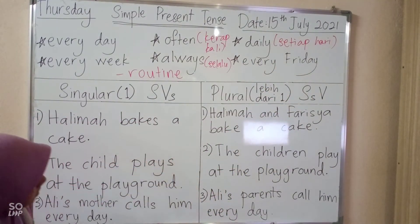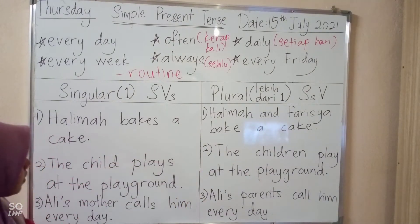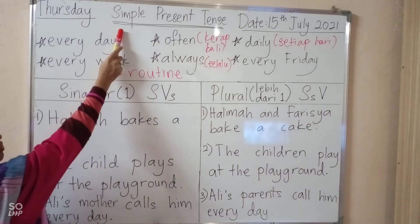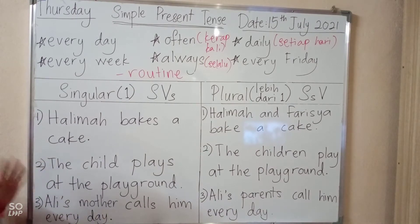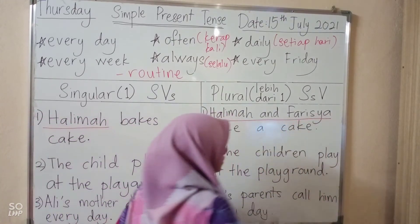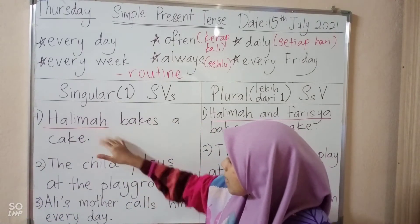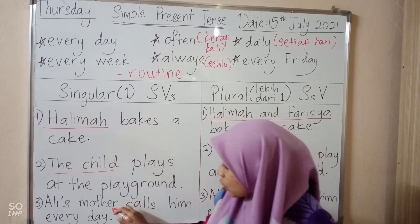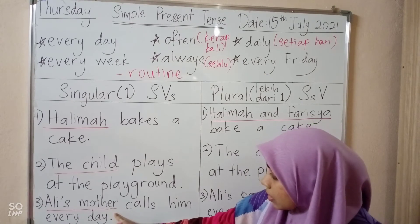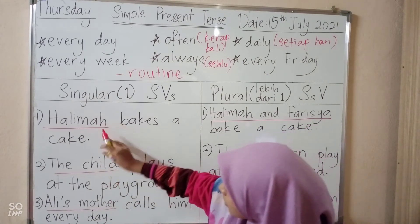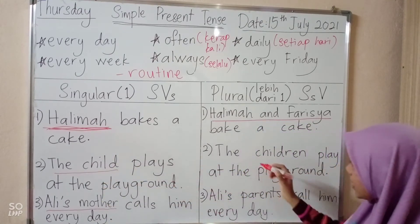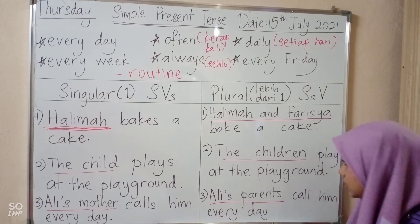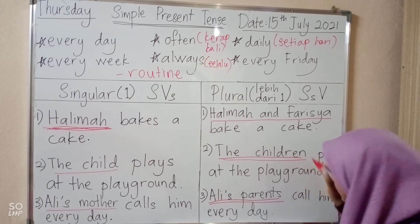Let's take a look at this simple rule, peraturan yang mudah. When we refer to simple present tense, we will think of the subjects — kita akan fikirkan tentang subjects. Subject is the doer, the pelaku. We are referring to active sentences, where the subject is often at the beginning of the sentence, dekat permulaan ayat.